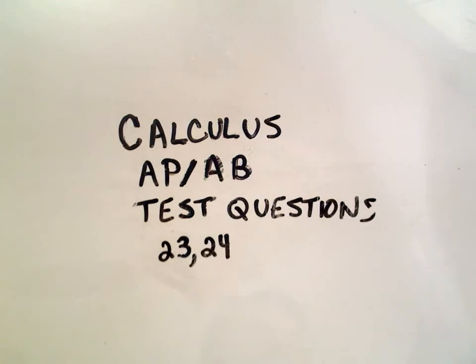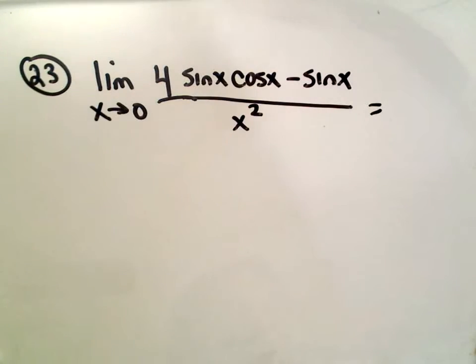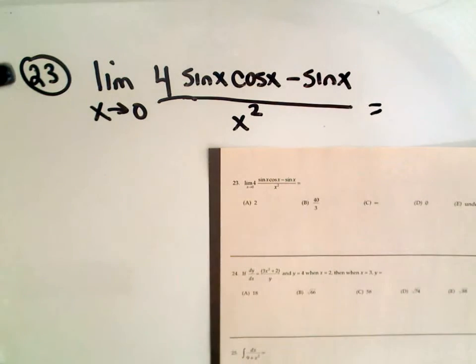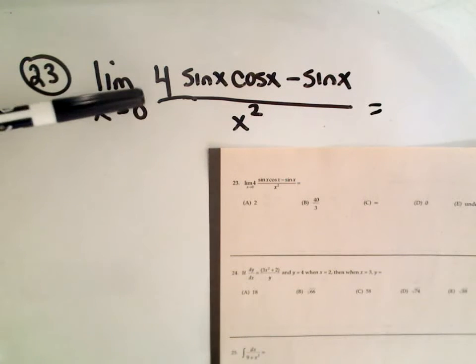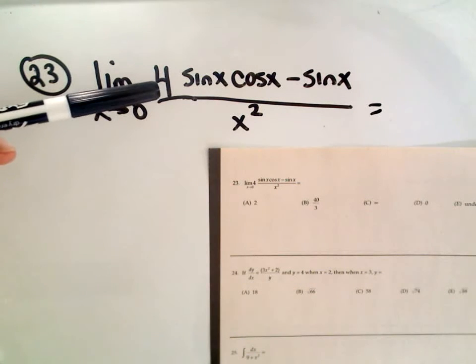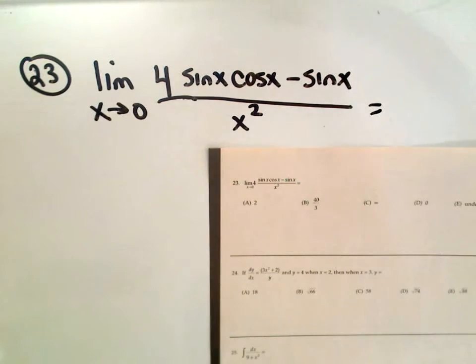Okay, so this is going to be the Calculus AP AB test questions 23 and 24. Number 23 says the following. It says that the limit as x approaches 0 of 4 sine x cosine x minus sine x over x squared.